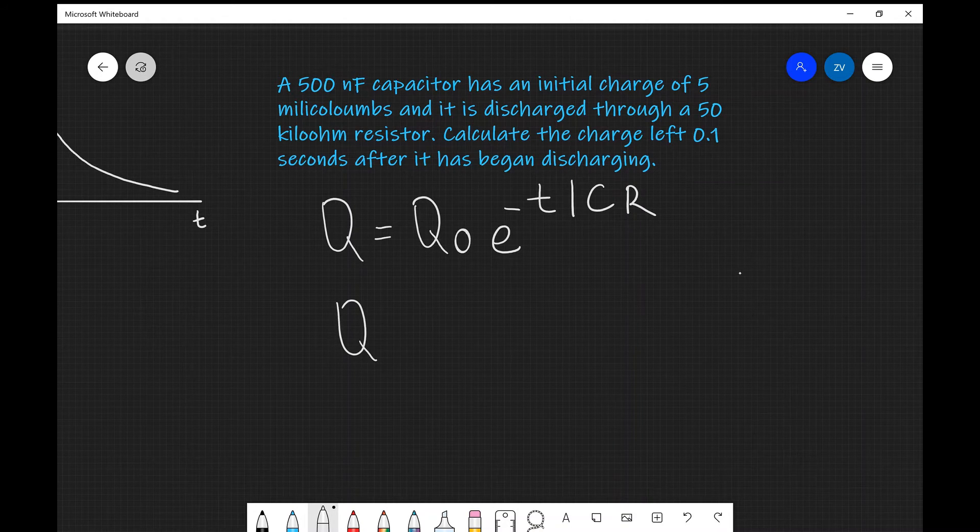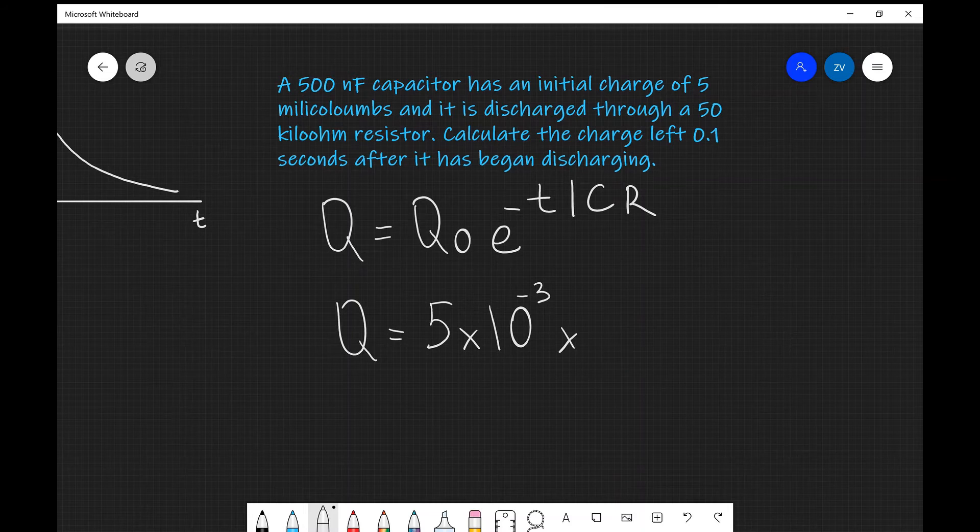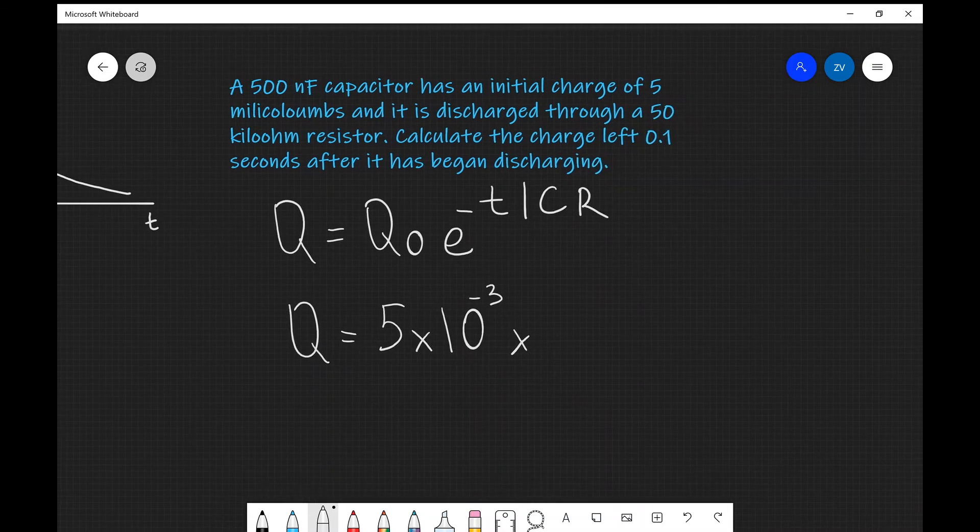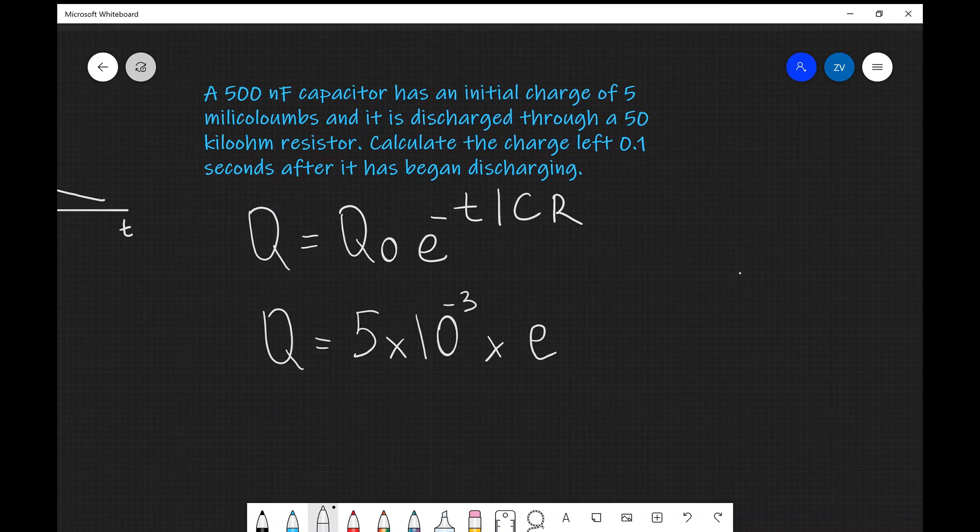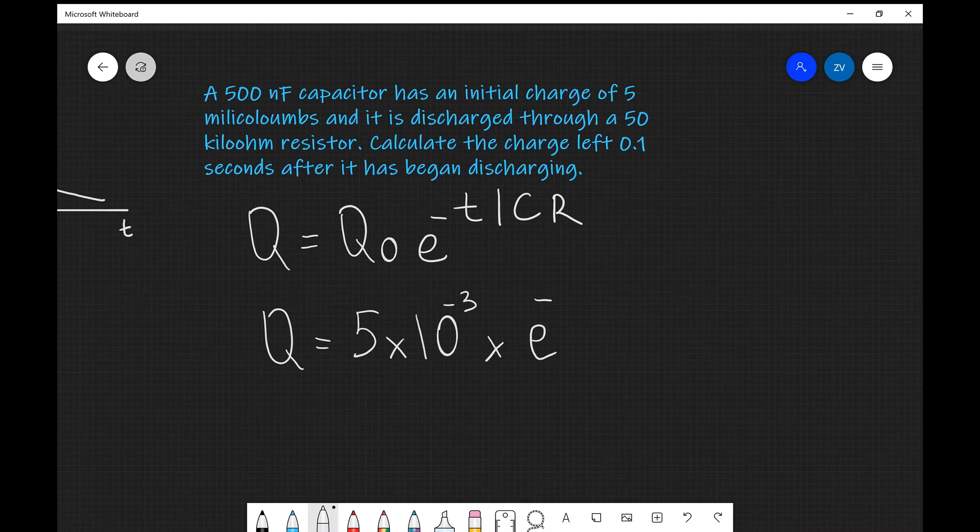So I'm going to say that Q is going to equal Q₀, my initial charge, which is 5 millicoulombs, so this will be 5 × 10^(-3). Then I'm going to multiply that by my exponential function, so e raised to the minus, our time is 0.1 seconds.